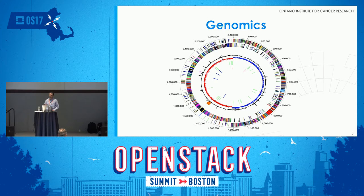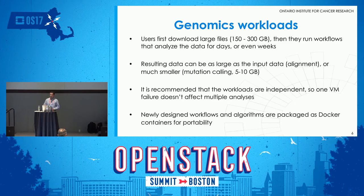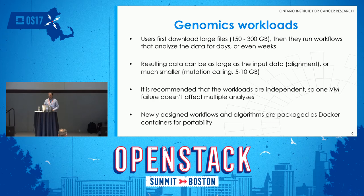For every donor, researchers need at least two files — one for the DNA of a normal sample from tissue that's not cancer-infected, and one from the biopsy of the tumor. Some patients have multiple tumors, so multiple files. It takes about five days on a virtual machine with four cores to align a single file. Researchers download files between 150–300 gigabytes and then analyze the data for days or weeks, depending on coverage. If doing VCF calling to find mutations, the output is usually 5–15 gigabytes — much smaller, but at scale it adds up.